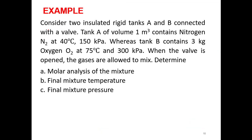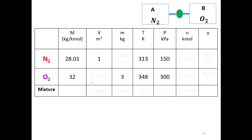Now let's work through an example. Consider two insulated rigid tanks A and B connected with a valve. Tank A has a volume of 1 cubic meter and contains nitrogen at 40°C and 150 kPa. Tank B contains 3 kg of oxygen at 75°C and 300 kPa. When the valve is opened, the gases mix.